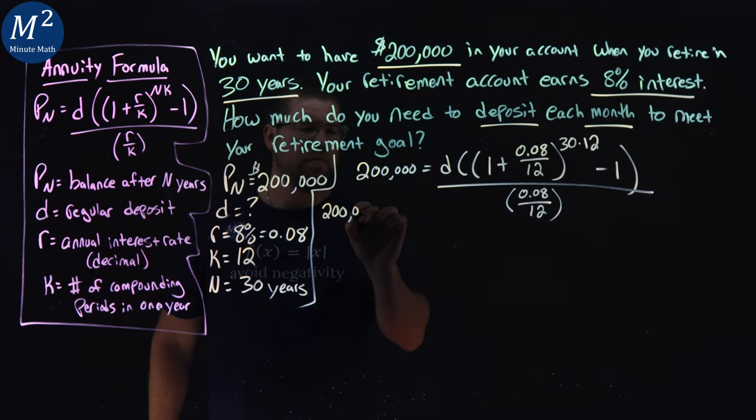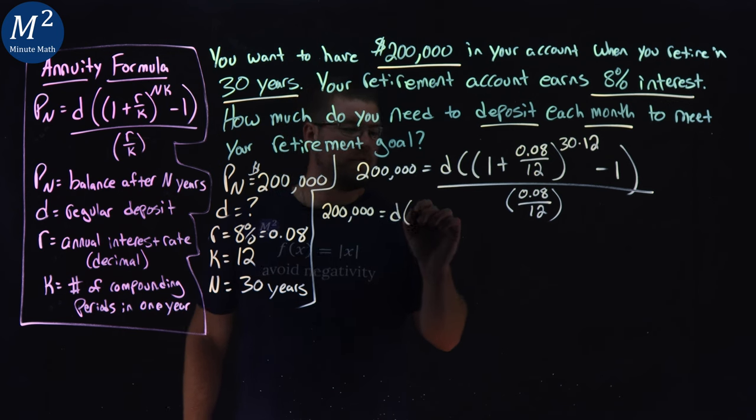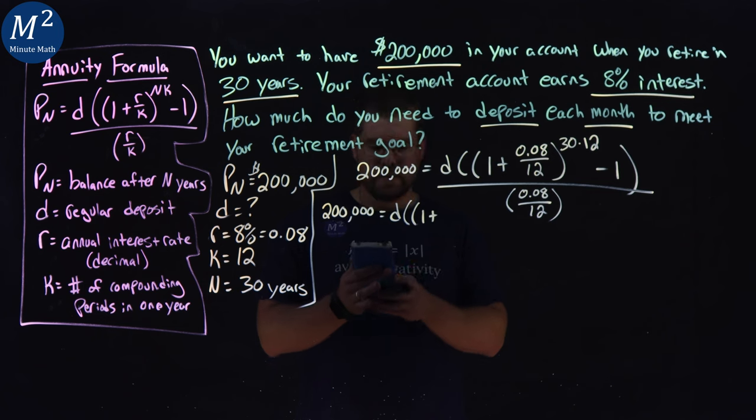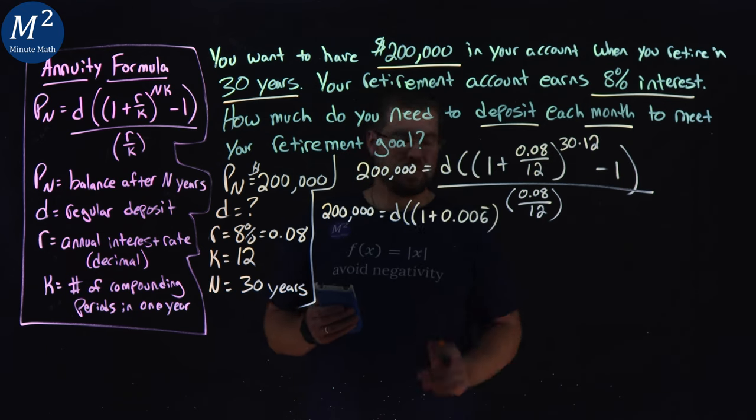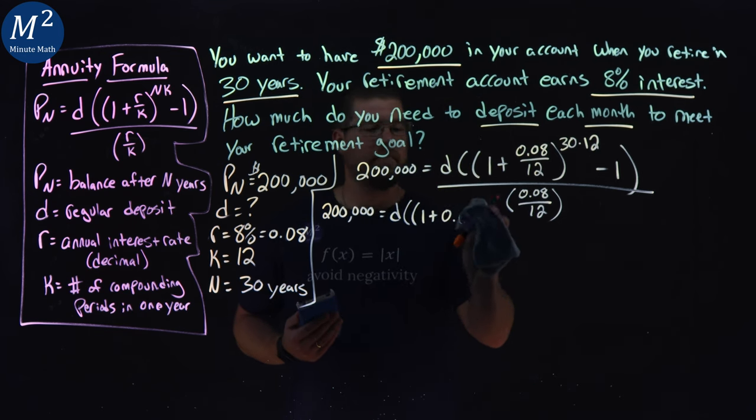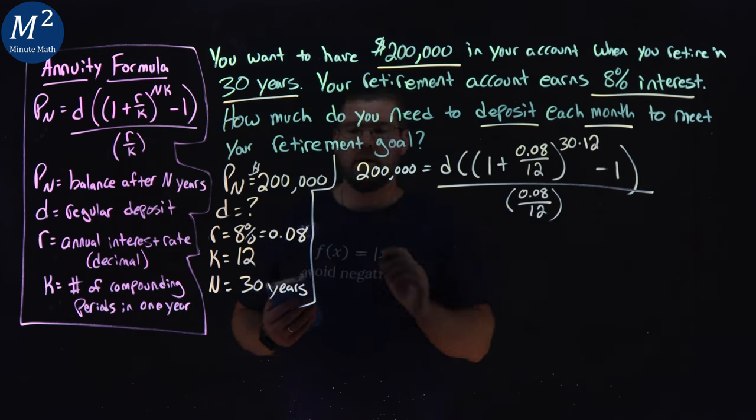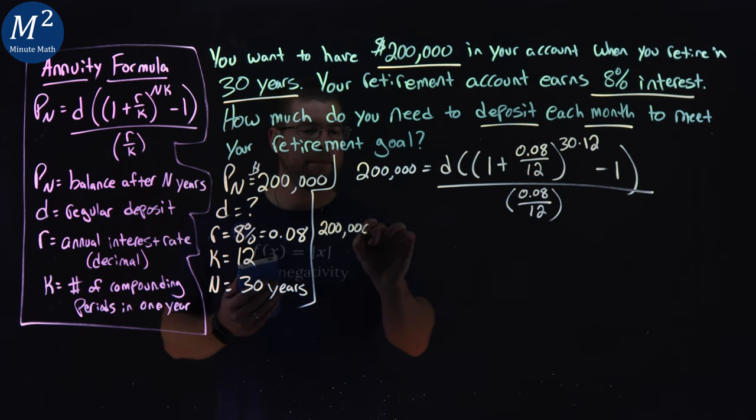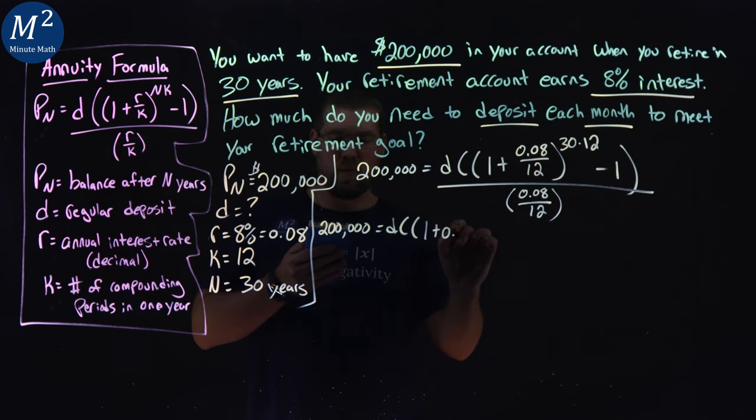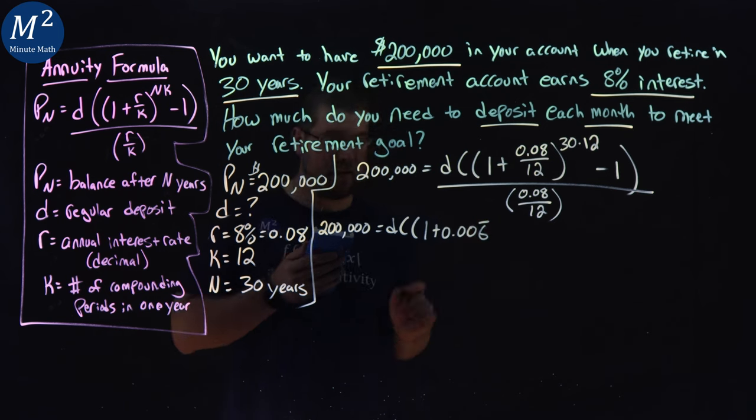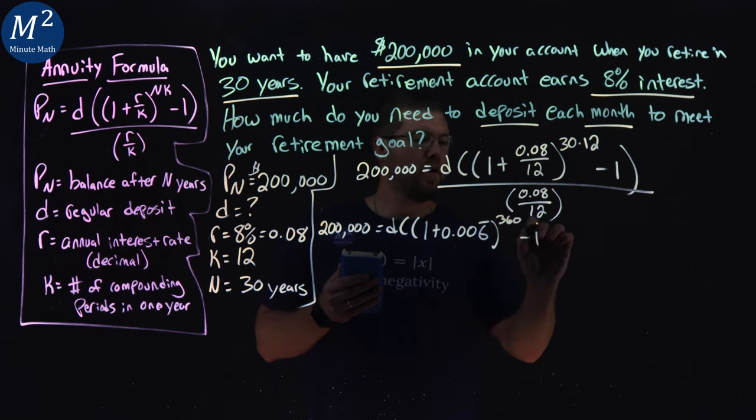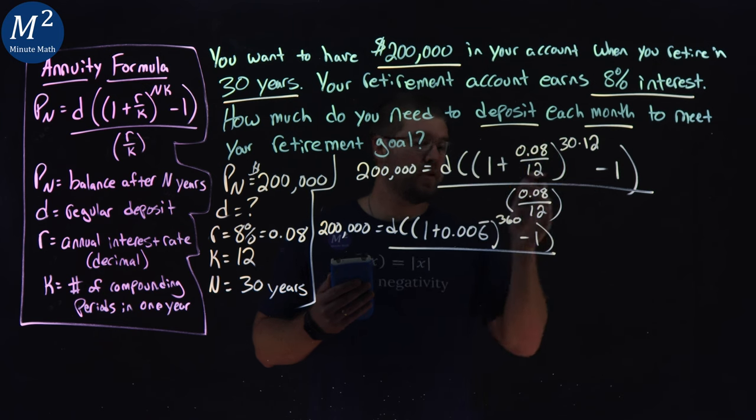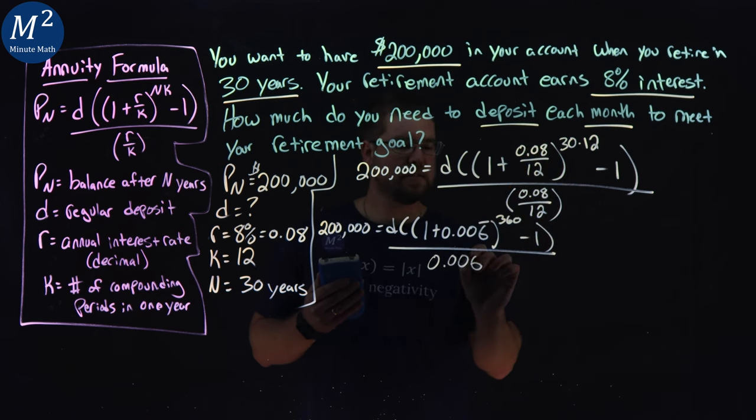200,000, I'm going to leave as such. Equals D times 1 plus 0.08 divided by 12, which is 0.006 repeating here. To the power of 30 times 12, 360. Minus 1, close parentheses, over that same value, 0.08 over 12, 0.006 repeating.